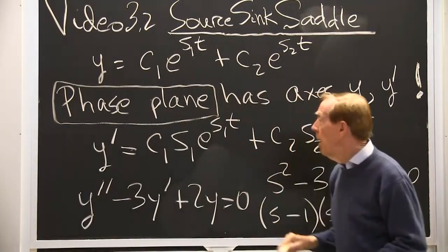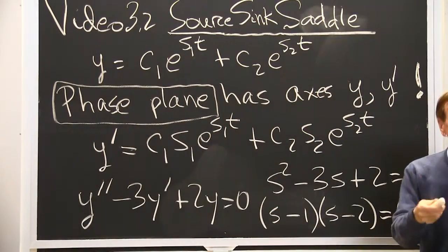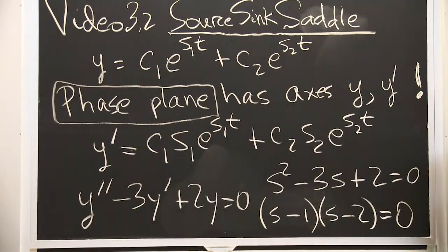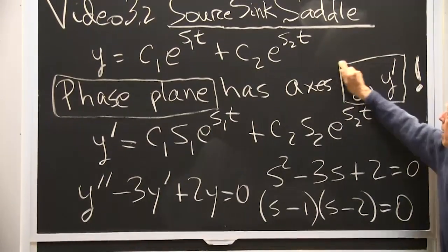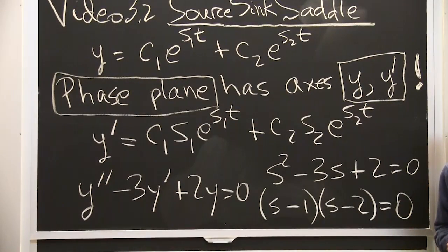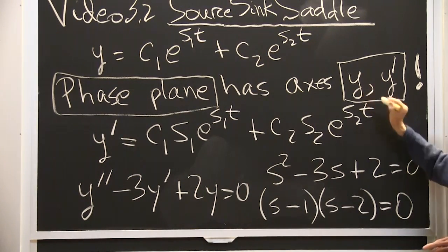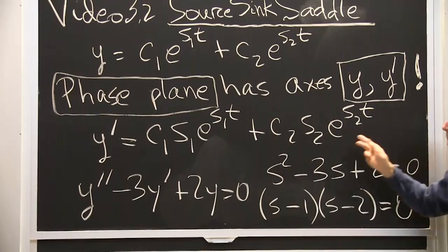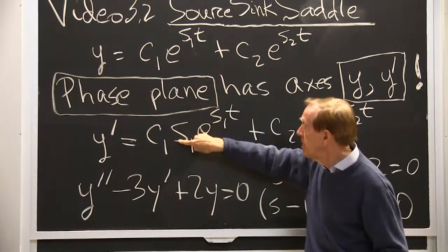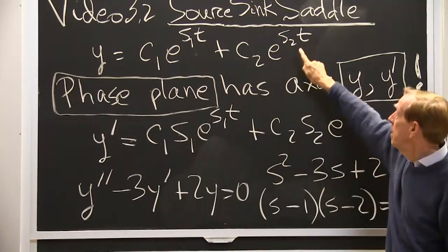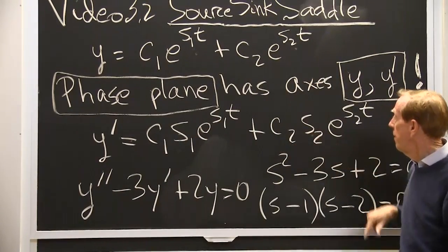We're going to draw the pictures in a plane. The axes we'll choose will be y and y prime, not t. You'll see how time comes into the picture. The two axes will be y and y prime. So I had to figure out what y prime was. It brings down an s1 from that term and brings down an s2 from that term.